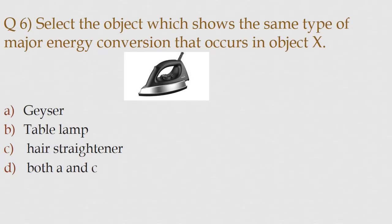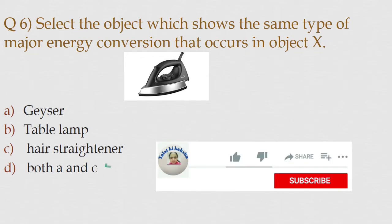Question number 6. Select the object which shows the same type of major energy conversion that occurs in object X. Option A: Geyser. Option B: Table lamp. Option C: Hair straightener. Option D: Both A and C. The correct answer is option D: Both A and C.